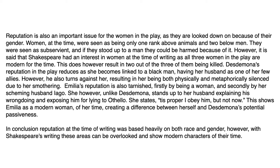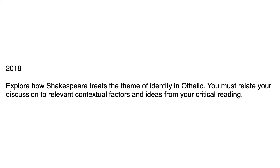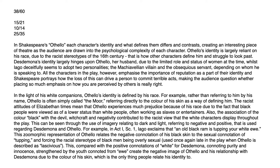Grade boundaries for this paper out of 60: 22 was needed for a D grade — this got a D with 24 — where the C grade boundary was 27. The prior year, 2018, question was: 'Explore how Shakespeare treats the theme of identity in Othello. You must relate your discussion to relevant contextual factors and ideas from your critical reading.' The teacher can't absolutely remember the boundaries but thinks 38 out of 60 would likely have been a B, though it could have been an A — it did shift by one. This candidate got a B overall.